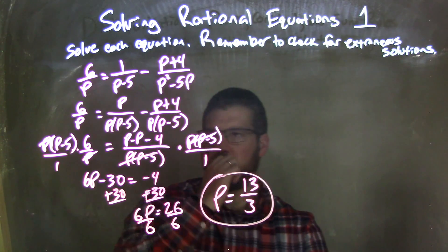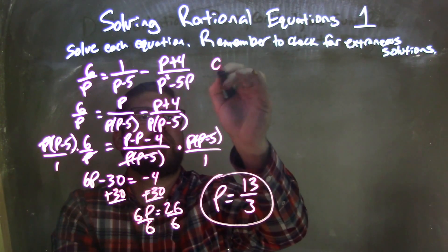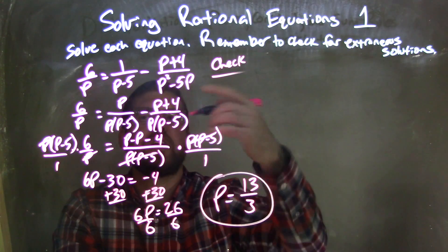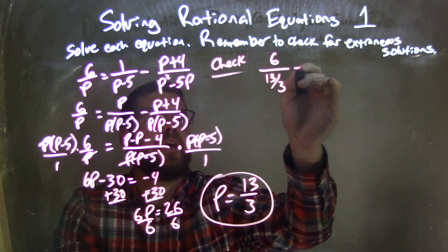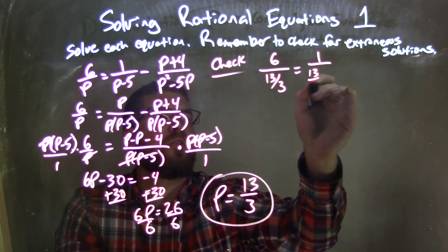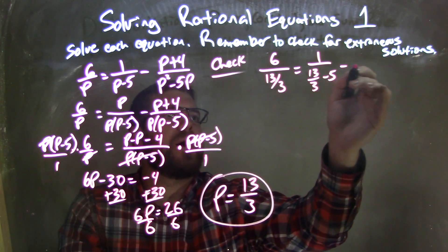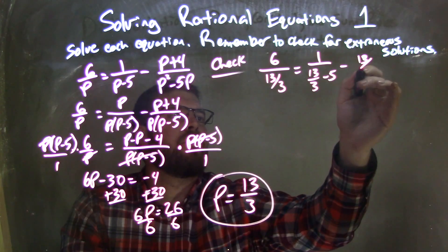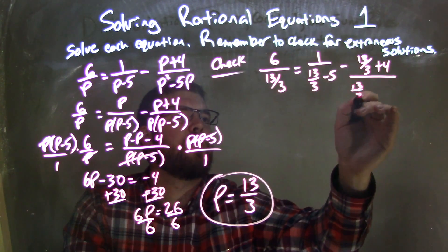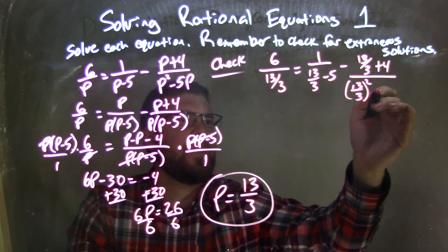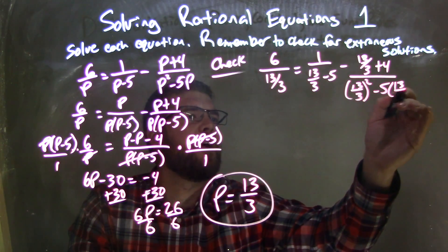So now I need to do my check. So I'm going to rewrite my equation right here, check with 13 over 3 in for p. So I have 6 over 13 over 3 equals 1 over 13 over 3 minus 5, minus 13 over 3 plus 4 over 13 over 3 squared minus 5 times 13 over 3.